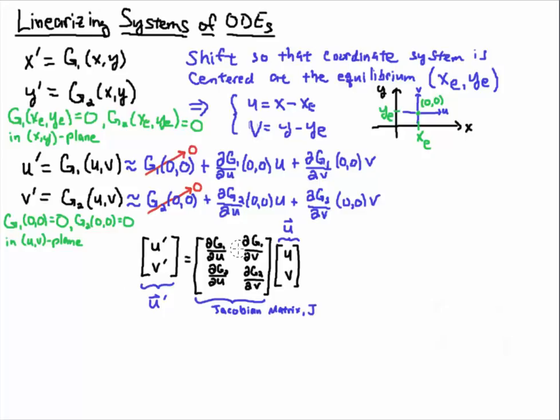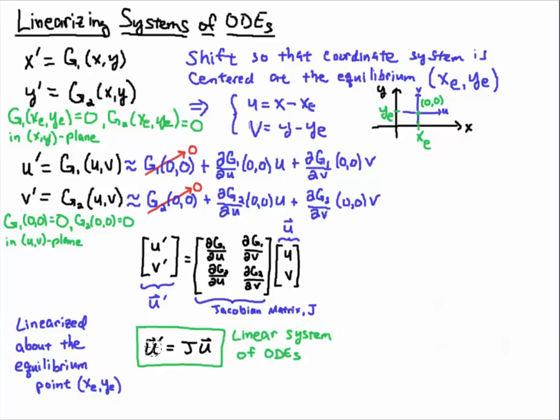This matrix of partials is called the Jacobian matrix. And now you've just linearized. This is a linear system of ODEs. This is a coefficient matrix filled with constants. You now have a linear system of ODEs that you're familiar with and know how to solve. You can use the eigenvalue method or the matrix exponential to easily solve this system. It's been linearized about the equilibrium point.